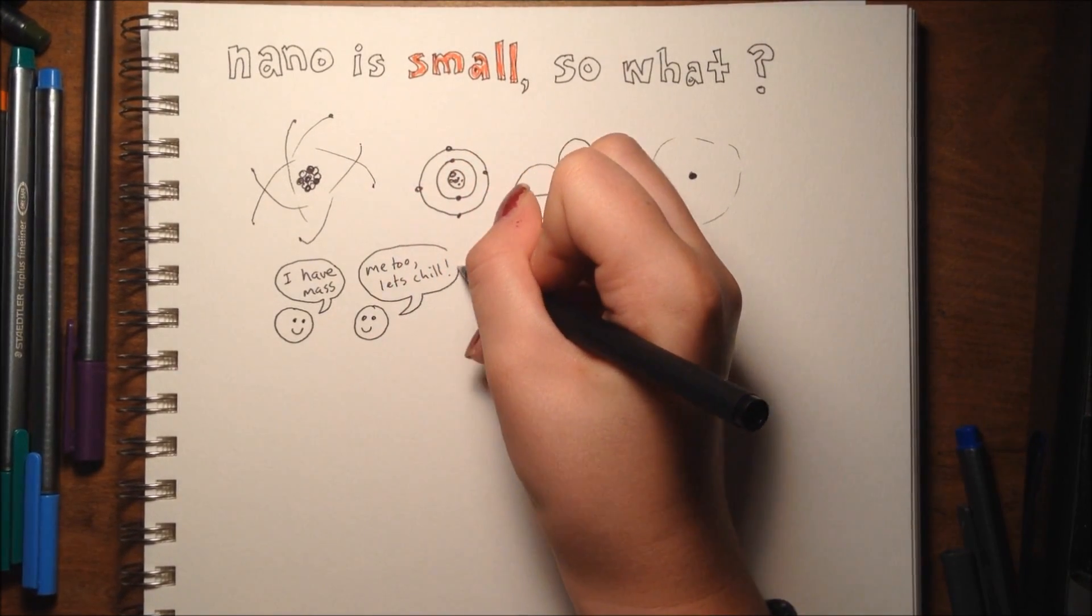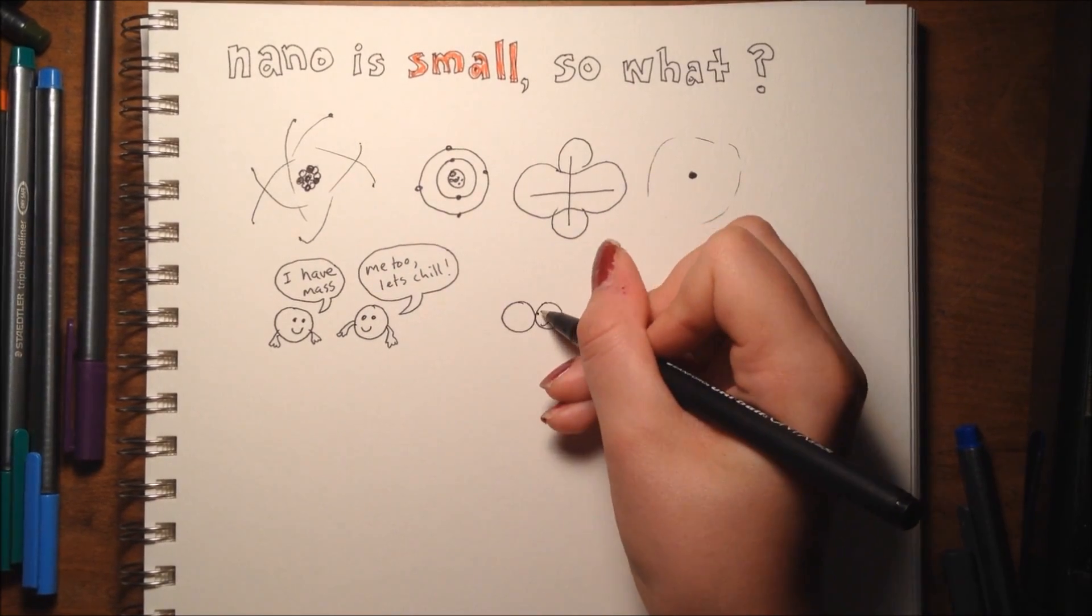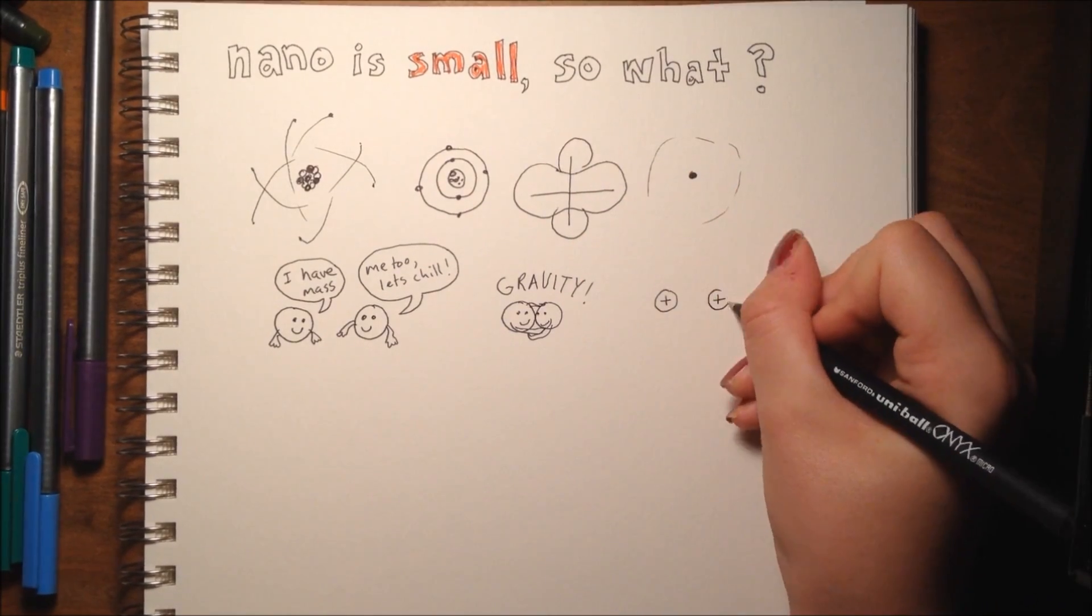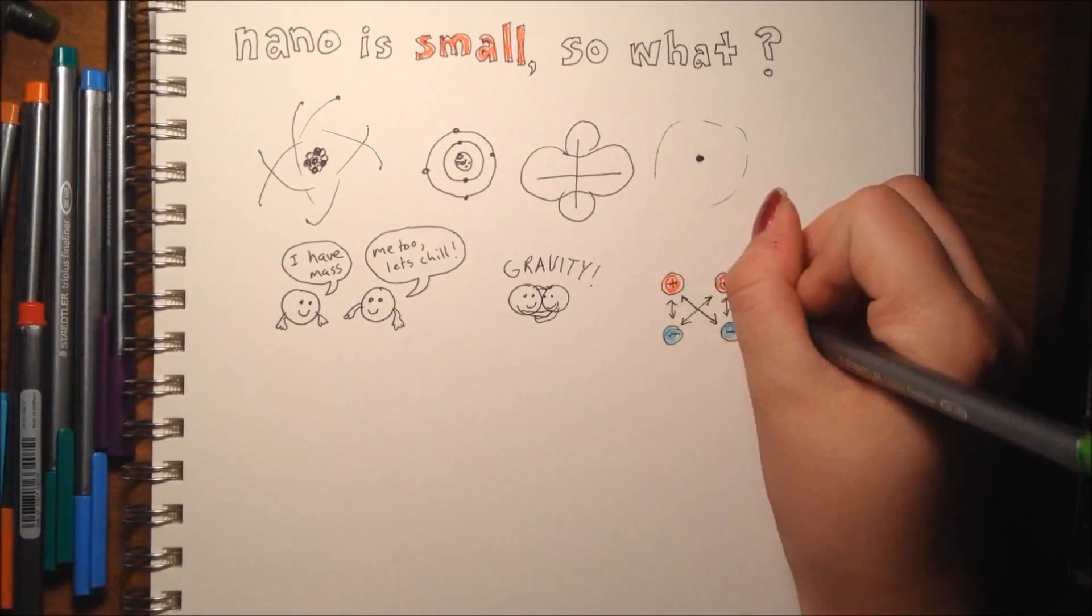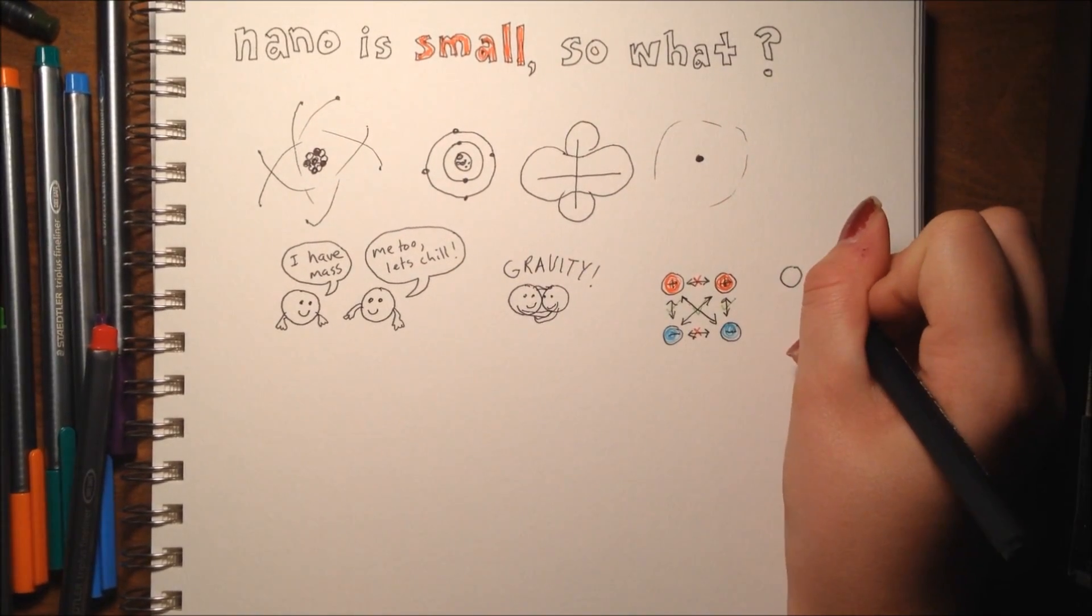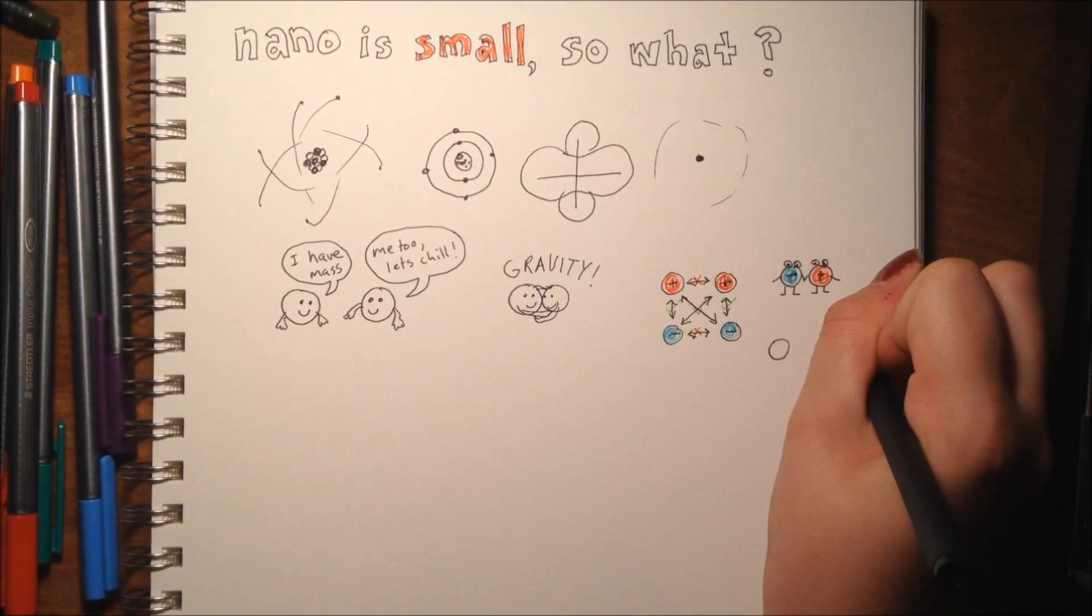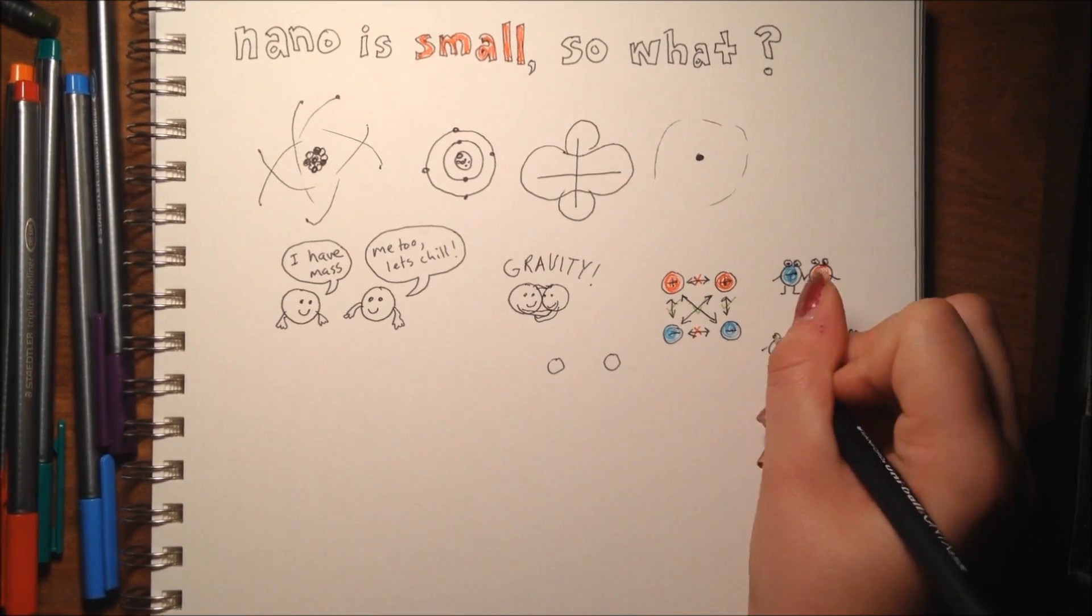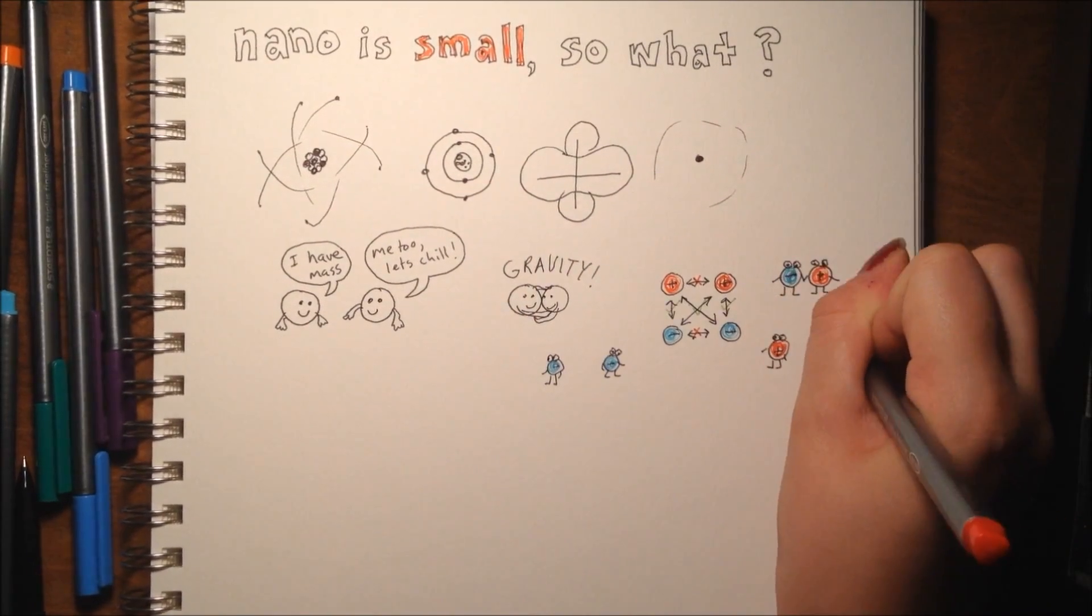On the scale that humans live, gravity is a dominant force. However, when things are really small, the more powerful force is actually electrostatic, or the attraction between negative and positive charges. And these interactions play a large role in nanotechnology and in the different properties that we try and take advantage of when we're working on the nanoscale.